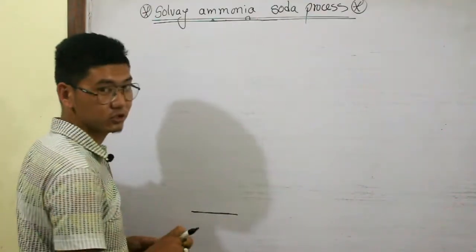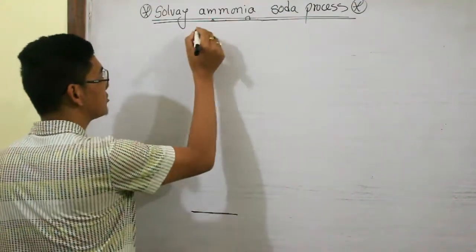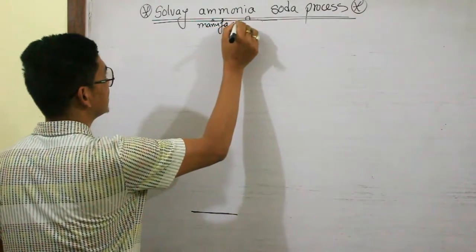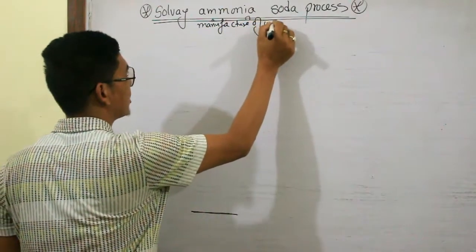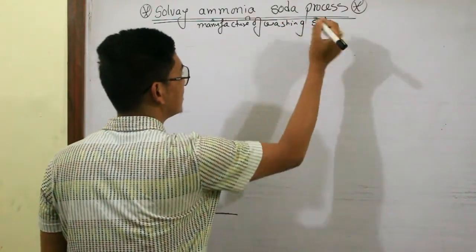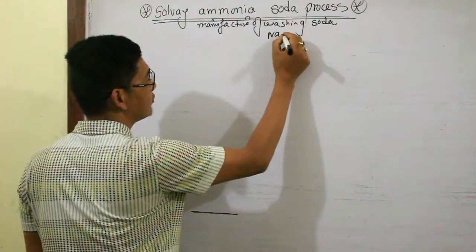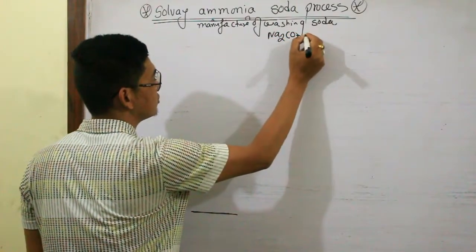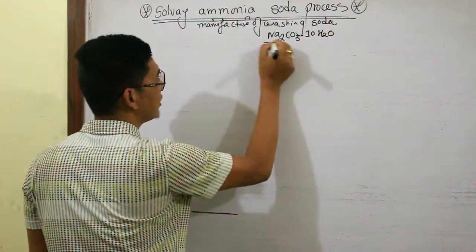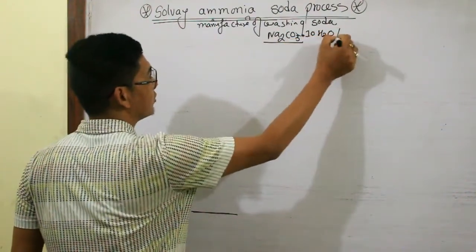Today I will give an explanation about the Solvay ammonia soda process. This process is used for the manufacture of washing soda. The molecular formula of washing soda is Na2CO3·10H2O, which is sodium carbonate with 10 water molecules.